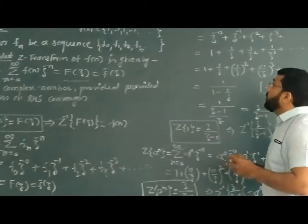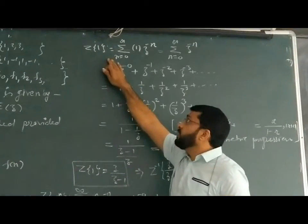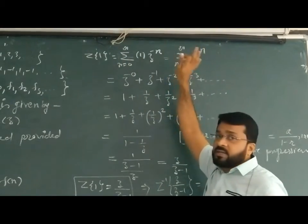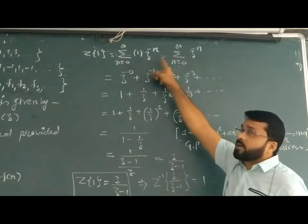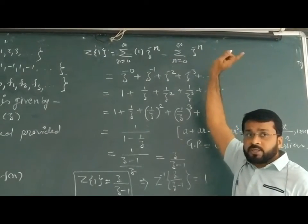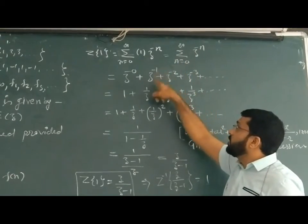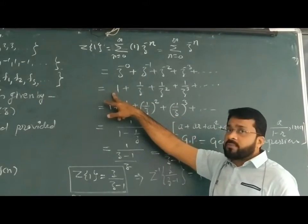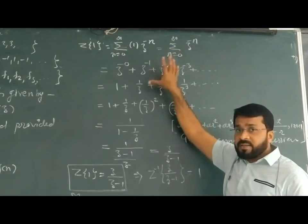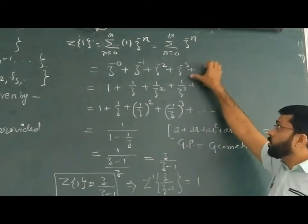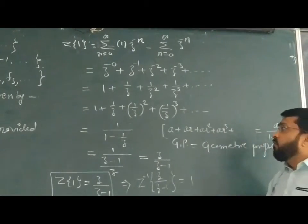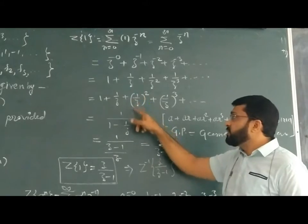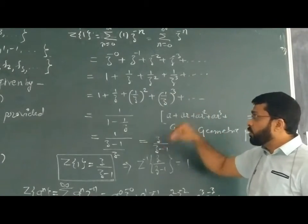Now we find the Z-transform of 1. By definition it is the summation from n = 0 to infinity of 1 * z^(-n). Expanding: z^0 + z^(-1) + z^(-2) + z^(-3) + ... which equals 1 + 1/z + 1/z² + 1/z³ + and so on.